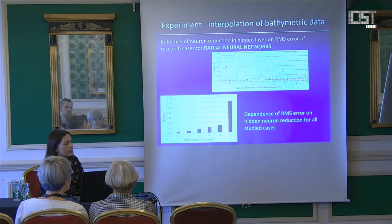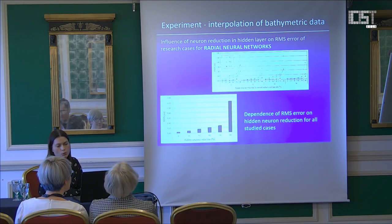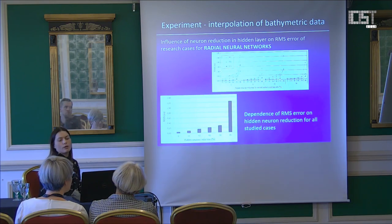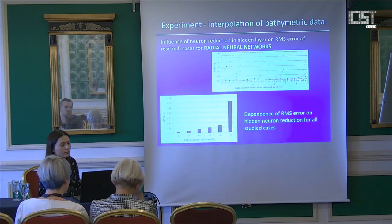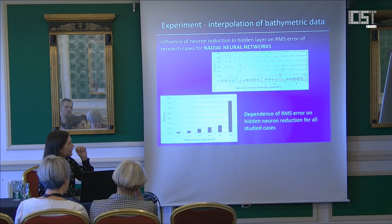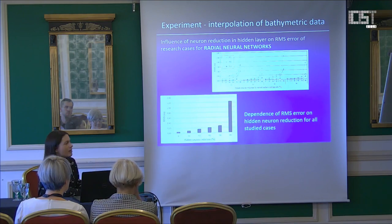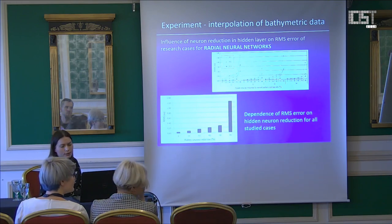The experiment with the radial network was conducted for two cases. In the first, the number of neurons in the hidden layer was equal to the number of input data. In the second case, hidden neuron reduction was applied, with the initial value of hidden neurons equal to the number of data points. Analyzing the results, more reduction of neurons in the hidden layer increases RMS error values. For the exact solution, where the number of hidden neurons equals the number of data points, errors have the smallest values.